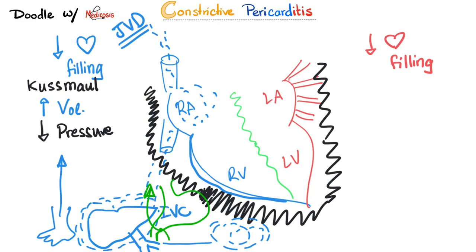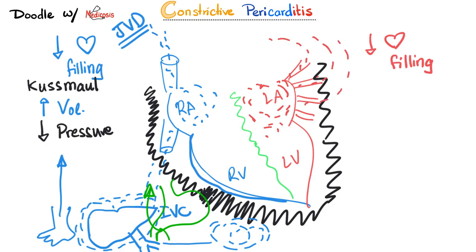Those are the manifestations on the right side. On the left side, decreased preload means the left ventricle cannot relax and accept blood. Blood backs up into the left atrium, then pulmonary veins, leading to pleural effusion and pulmonary edema. Less input to the left ventricle means less output — symptoms of low cardiac output develop.